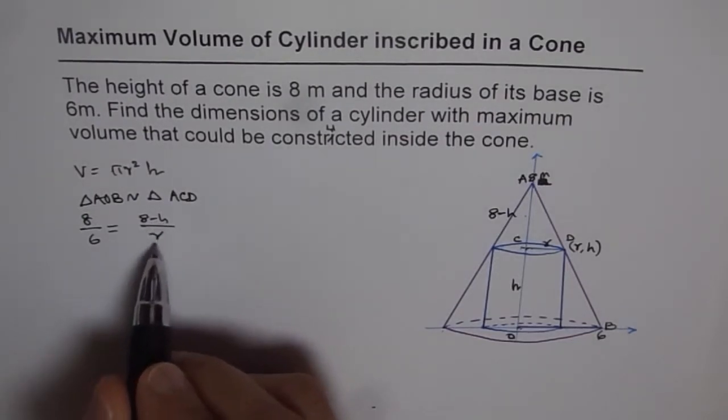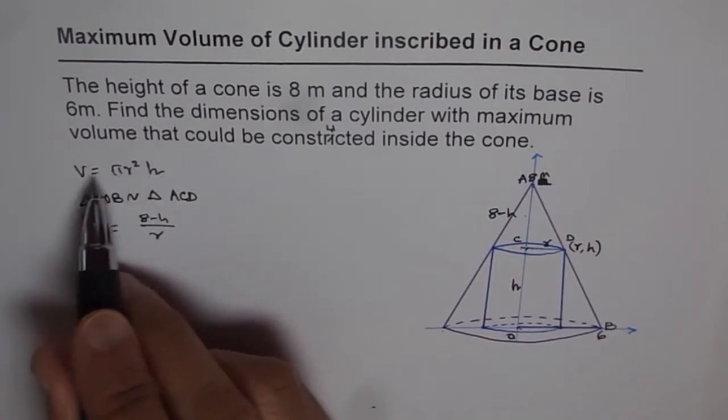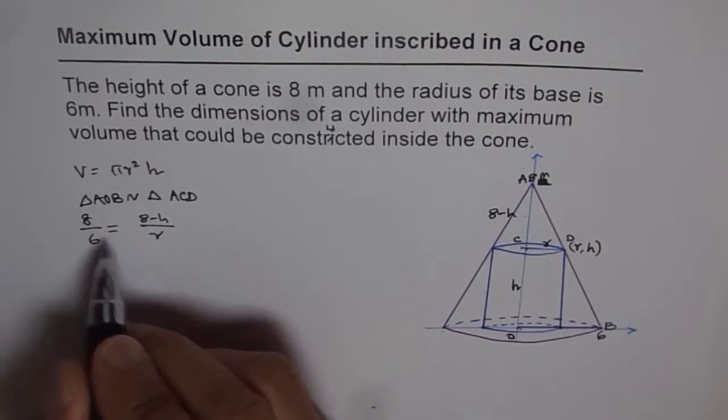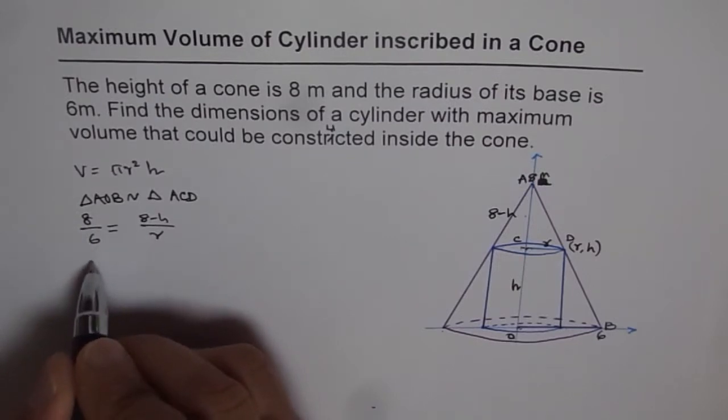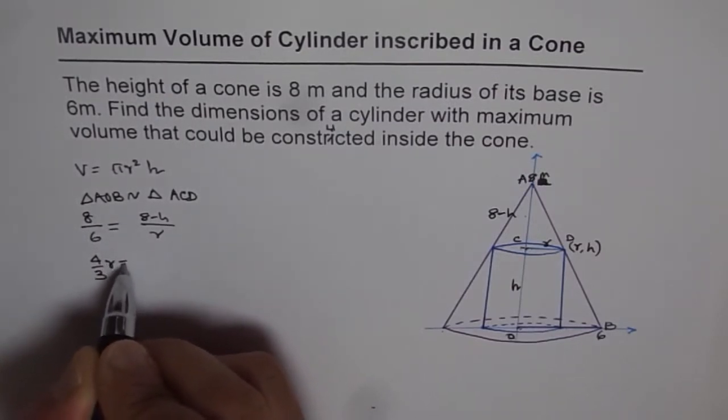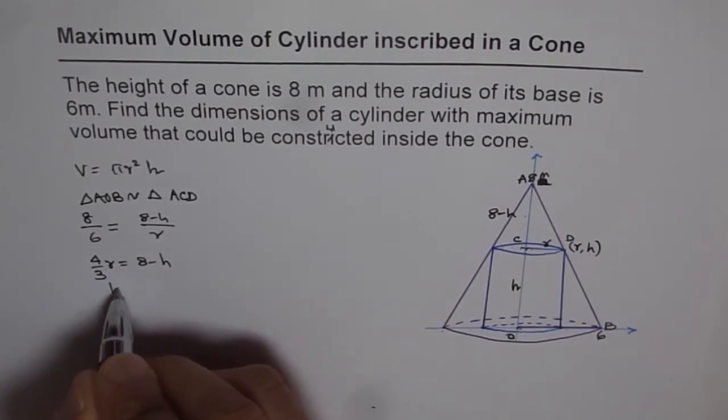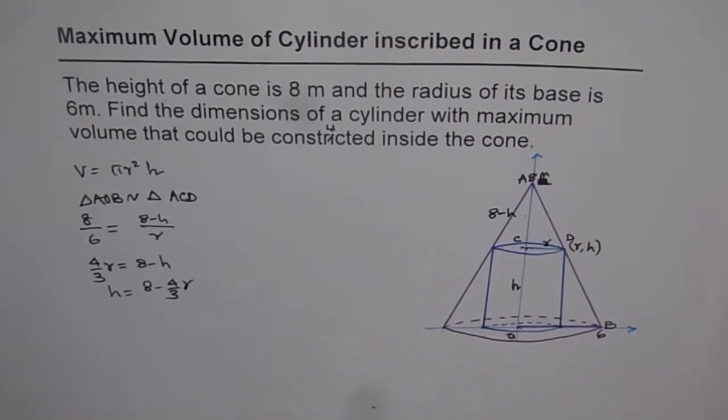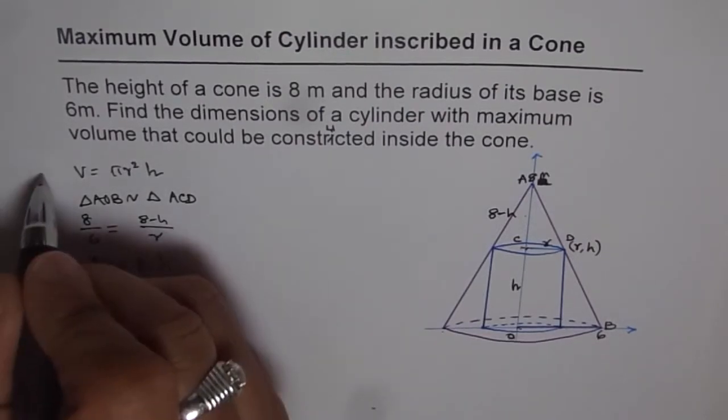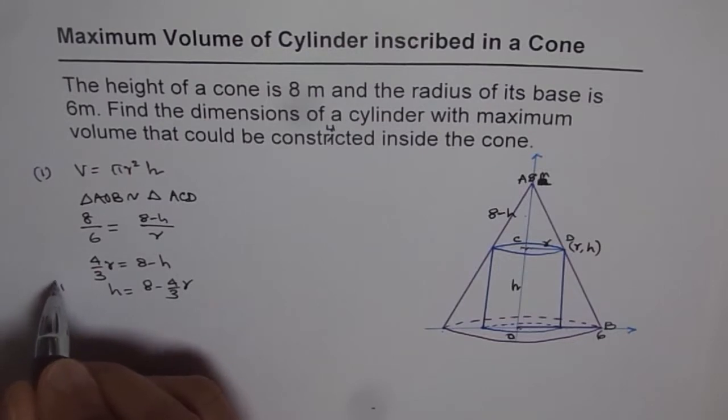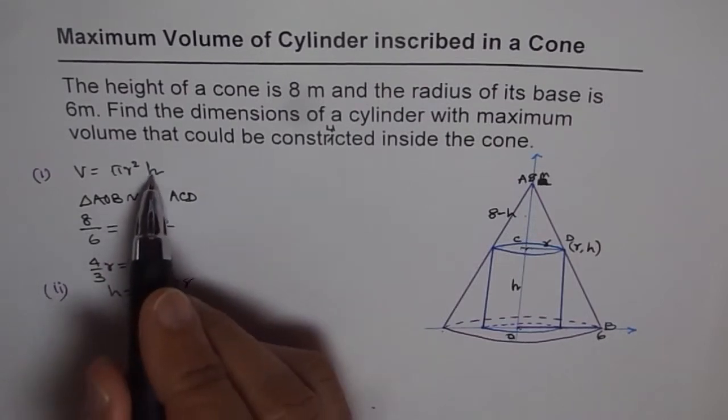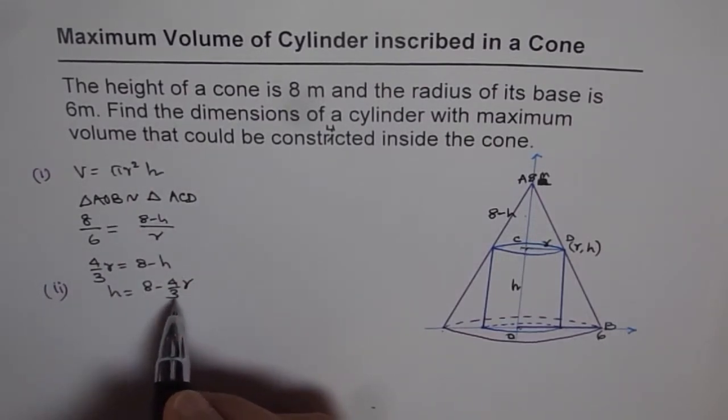So we can write what h is in terms of r, then we'll substitute h, we'll have the volume in terms of radius. So let's write, we'll cross multiply, so we get 8 over 6 is 4 over 3, so we get 4/3 r equals to 8 minus h, and h equals 8 minus 4/3 r, so that is the relation. Now we'll substitute this value of h. So we have equation 1, which is the volume, equation 2, which relates height with radius.